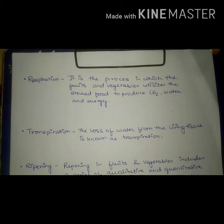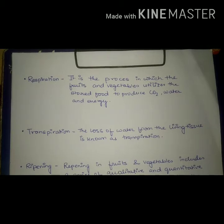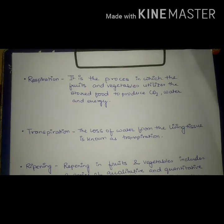After harvesting, for how much time does this respiration continue in fruits and vegetables? Respiration continues until the stored food, i.e. starch and sugar reserves, are depleted in the fruits and vegetables. Respiration depends on a number of factors such as temperature, oxygen concentration, and carbon dioxide concentration. If the concentration of oxygen is low, the respiration rate slows down.